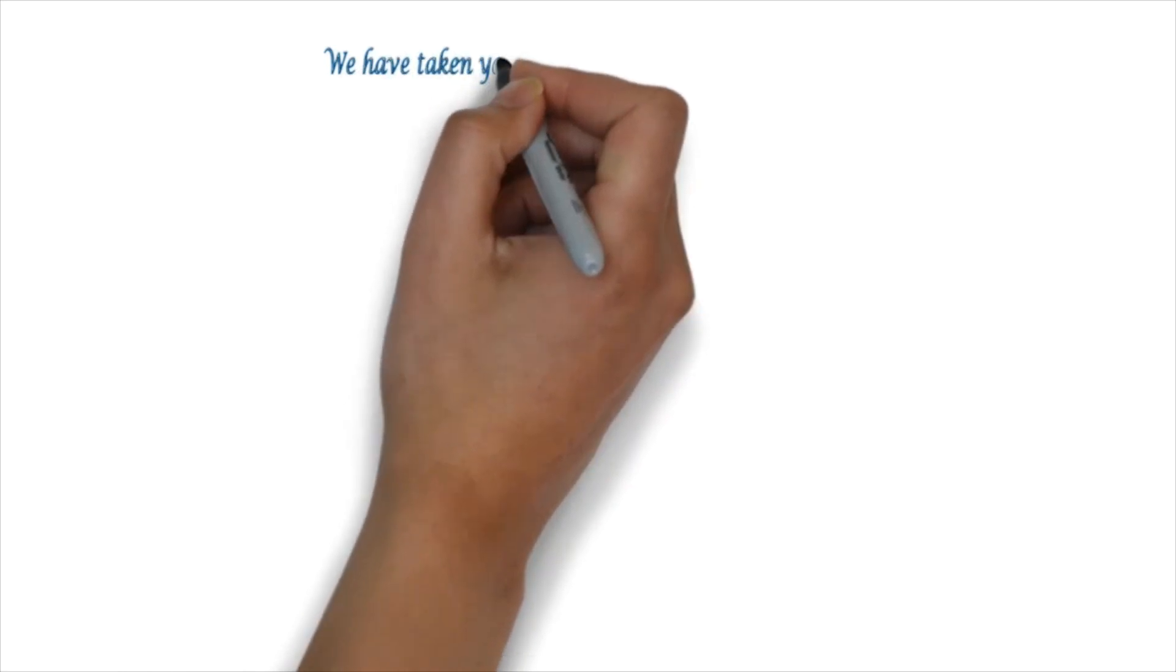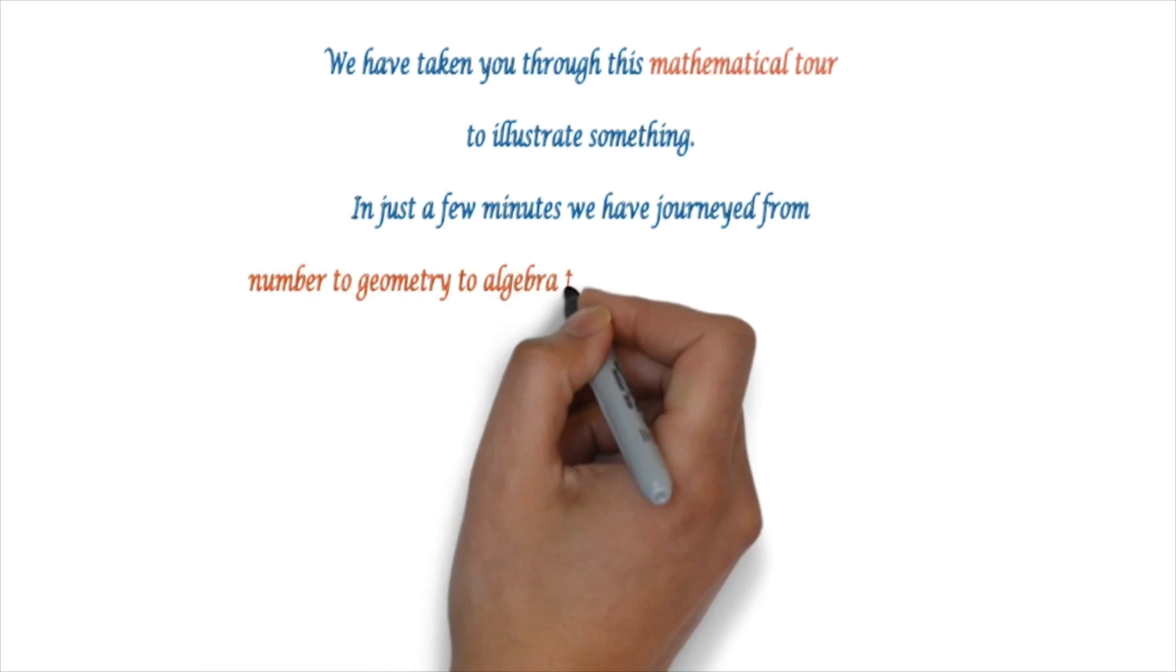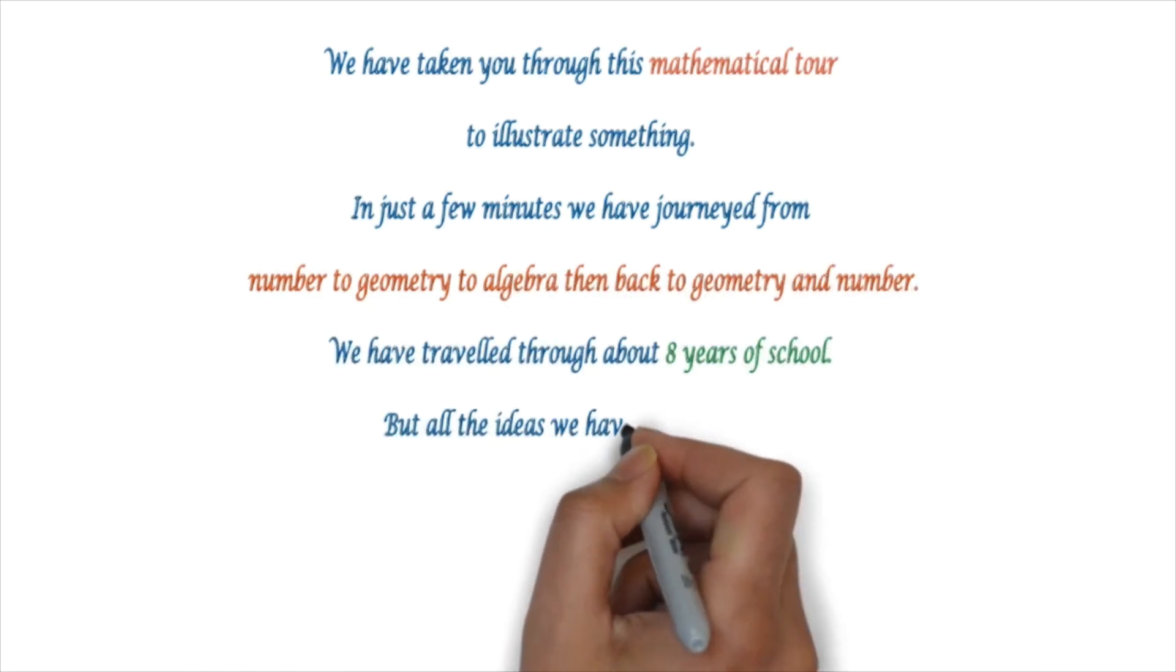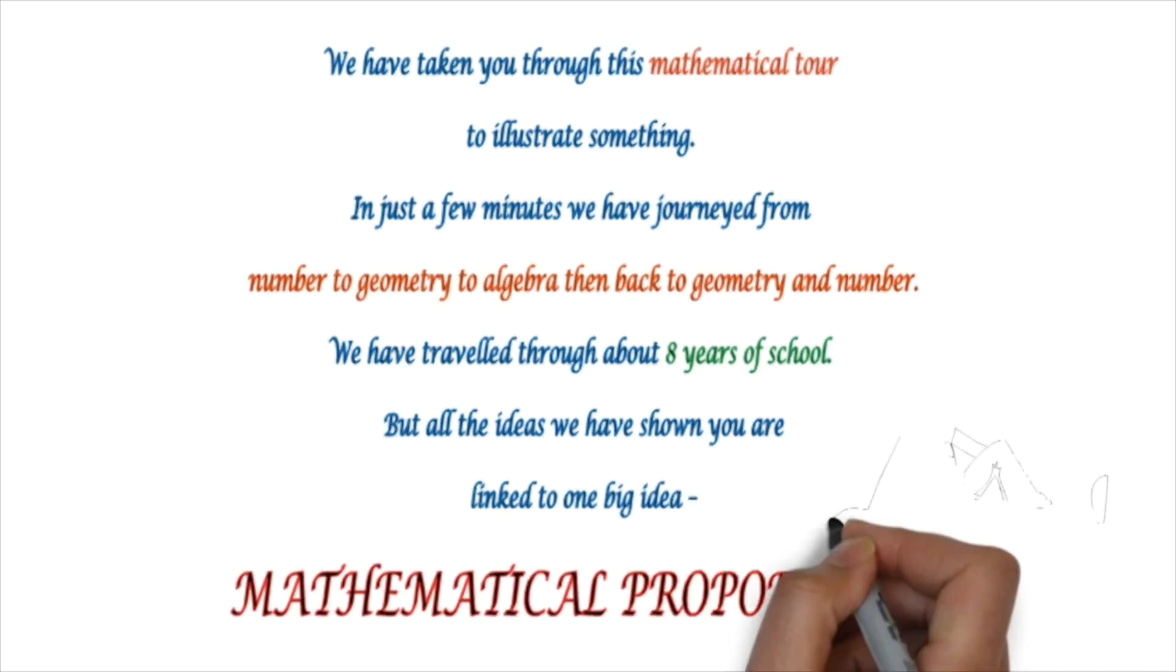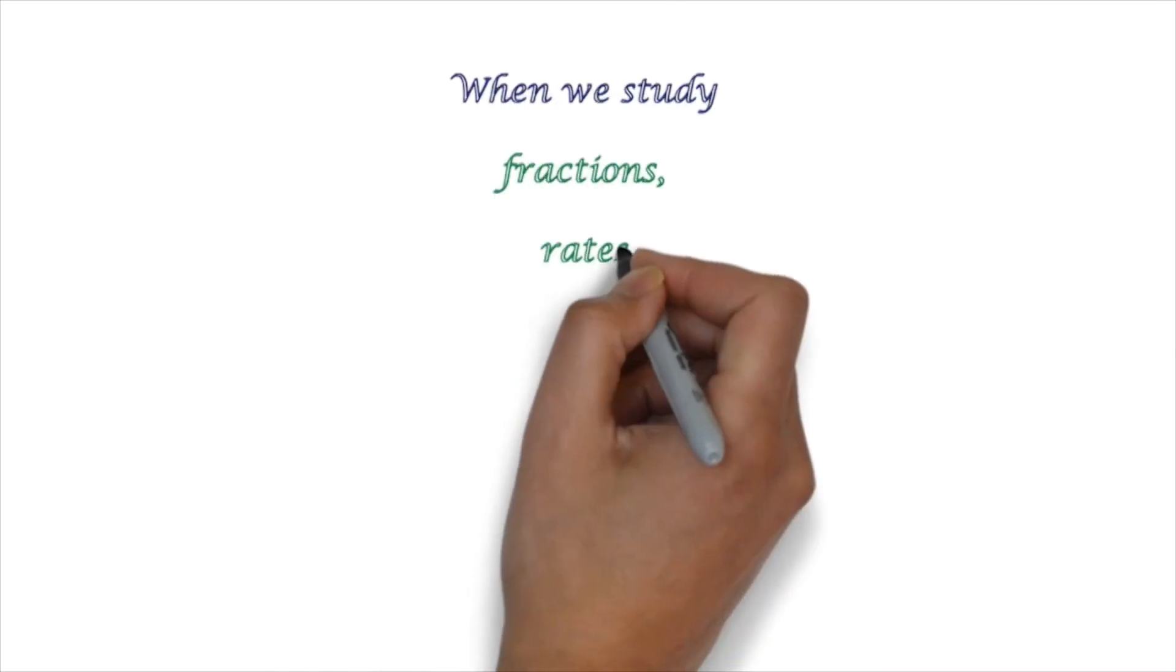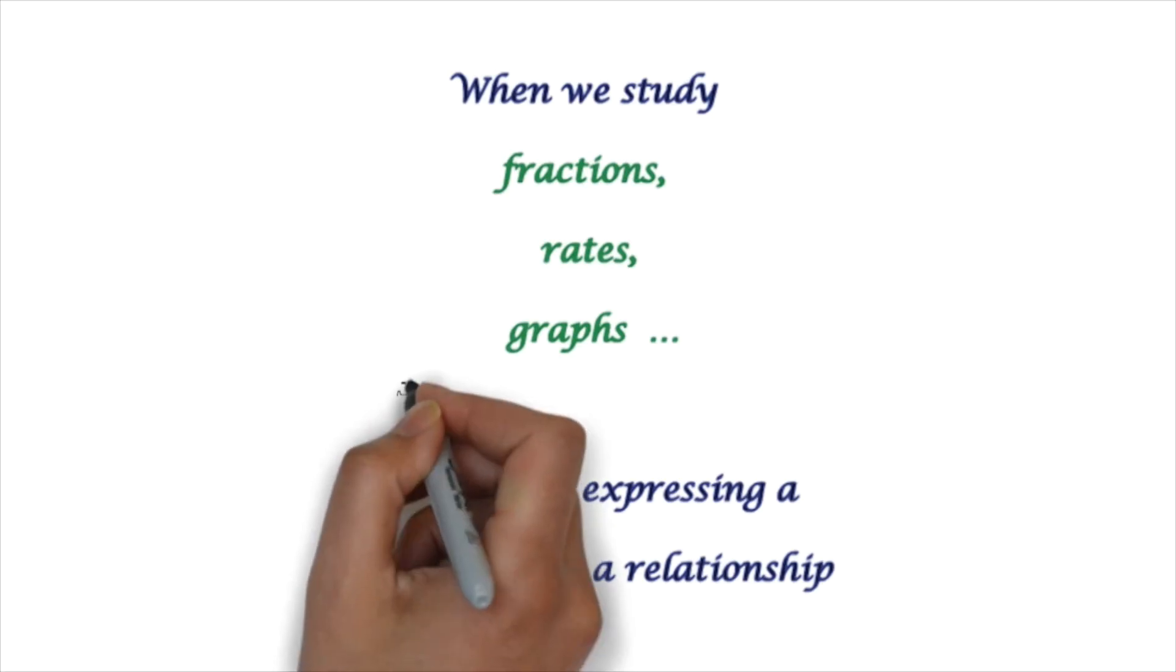So we've taken you through this mathematical tour to illustrate something. In just a few minutes, we've journeyed from number to geometry to algebra, then back to geometry and number, about eight years of school. But all the ideas we've shown you are linked to one idea, mathematical proportions. So all of these things are expressing a proportion or a relationship.